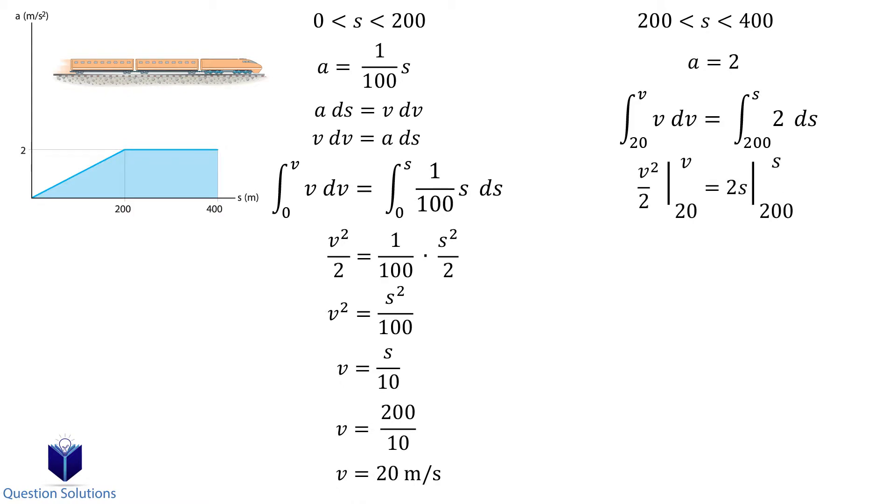Solving this integral and isolating for velocity gives us our velocity equation for the next segment. Let's calculate the velocity of the train at 400 meters to make it easier for us to draw the graph. Substituting 400 meters gives us a velocity of 34.64 meters per second.